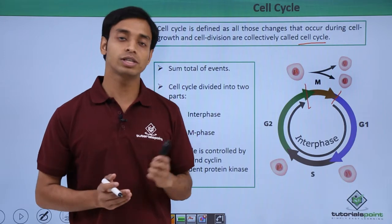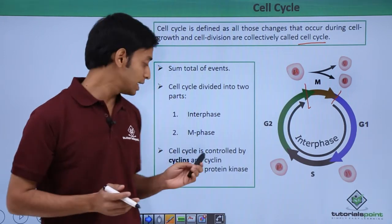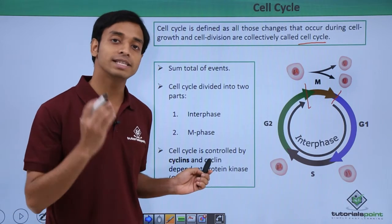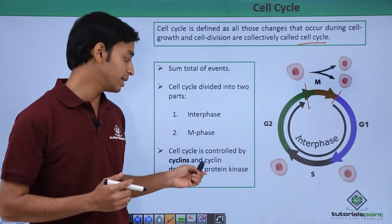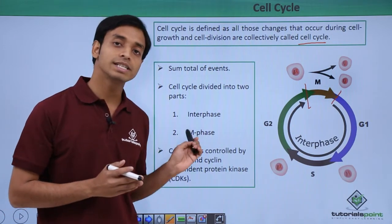protein which controls the cell cycle, or regulates the process of cell cycle, is known as cyclin. And there are various enzymes which are known as cyclin-dependent protein kinases, abbreviated as CDKs. So these CDKs and the